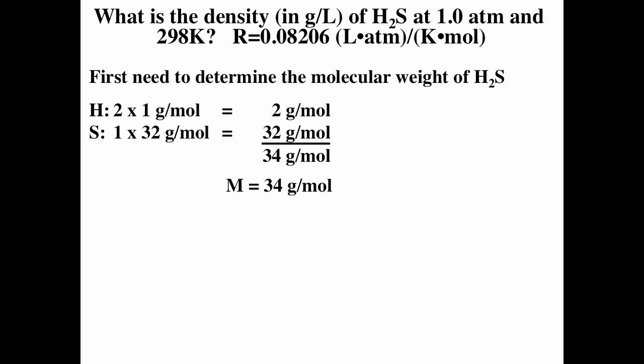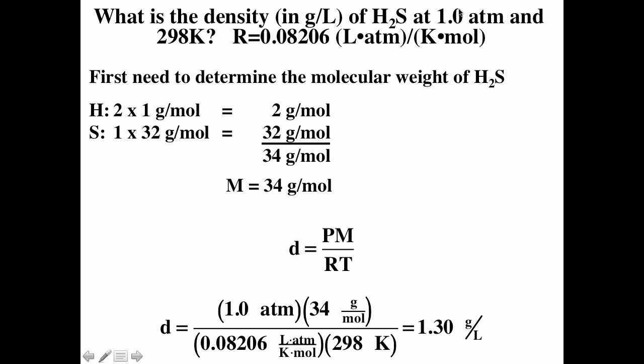What is the density in grams per liter of hydrogen sulfide at 1 atmosphere and 298 Kelvin? First, calculate the molar mass of H2S: hydrogen has atomic mass 1, and we have 2 of them, giving 2; sulfur has atomic mass 32. The molar mass of H2S is 34 g/mol. Using D = PM/RT, our pressure is 1 atmosphere and molar mass is 34. We use R = 0.08206 L·atm/(mol·K).